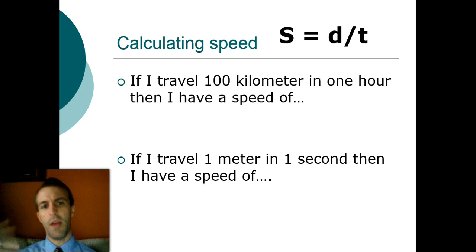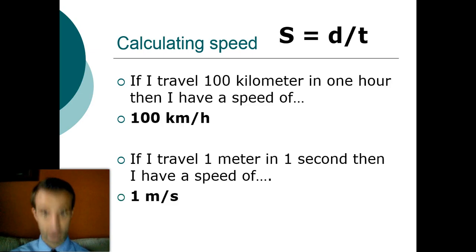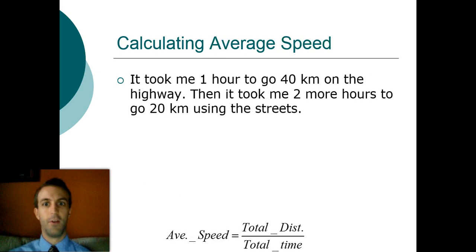So if in one hour you travel 100 kilometers, what's your speed? Distance over time. That's right, 100 kilometers per hour. Not too hard there. If you travel one meter in one second, then your speed is one meter per second. Nothing too hard there.